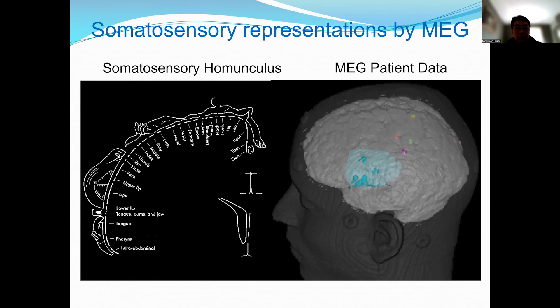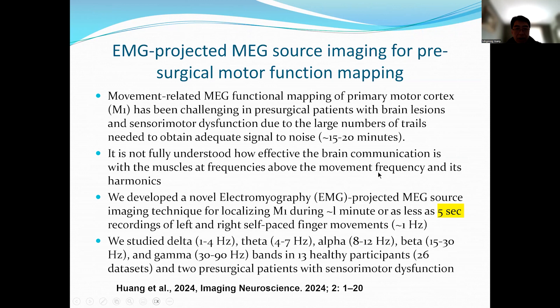We can also localize multiple regions like the somatosensory homunculus — localizing the hand area in green and the lip area in yellow. This is a patient with a giant brain tumor. We can superimpose functional information on the anatomy.